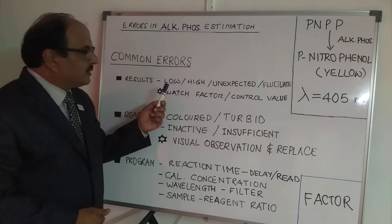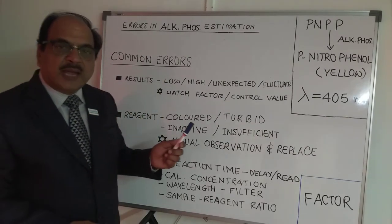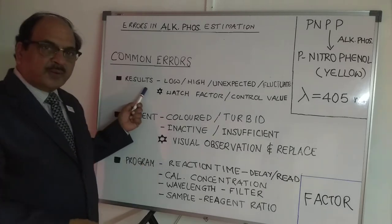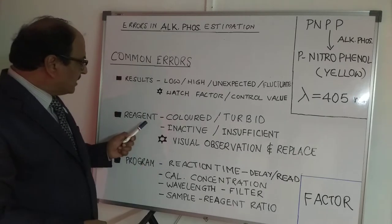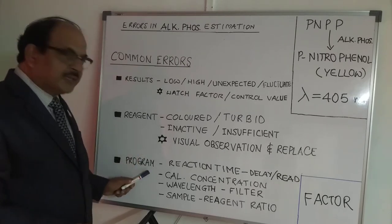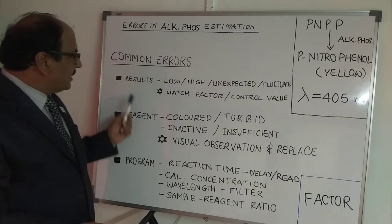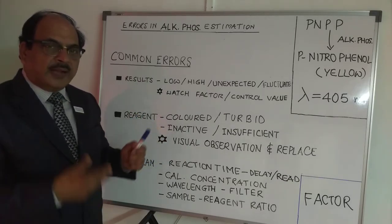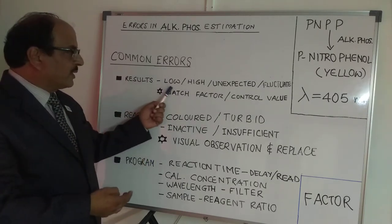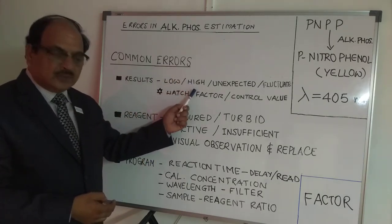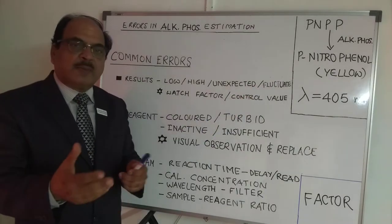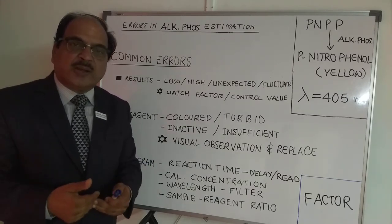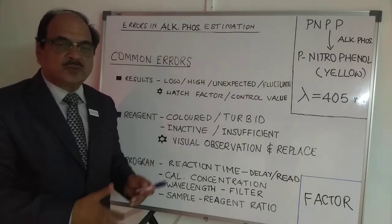Now let's come down to the errors in clinical chemistry. Errors are classified into three categories: one which are result oriented, one which has to do with the reagents, and the third category is programs of the analyzer. For result-oriented errors, there are four categories: low results, high results, fluctuating results (sometimes low, sometimes high), and the fourth category where the clinician is expecting a certain value and your results are not matching — so, unexpected.